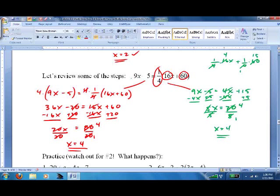Plug it back in. 9 times 4 is 36, minus 5 is 31. And 16 times 4 is 64, plus 60 is 124. I need a calculator for this. 124 divided by 4 is 31. So, it looks like I made a mistake somewhere. Probably in my math. 16 times 4 plus 60, 124 divided by 4. This is definitely 31, which is what I got the first time, and I just didn't realize it. Like I said, always check your work.